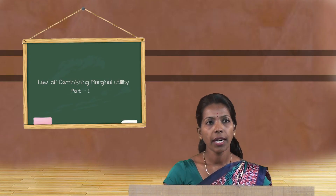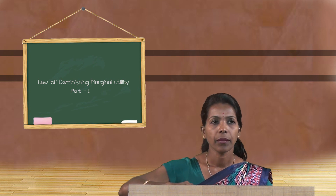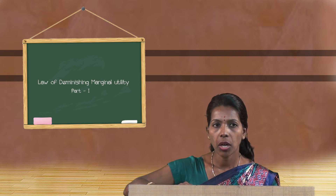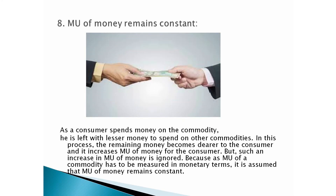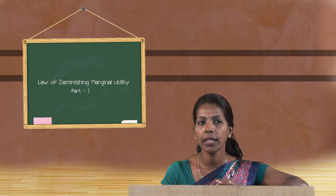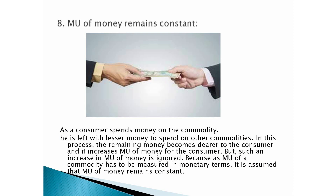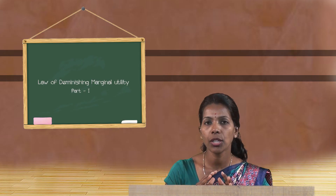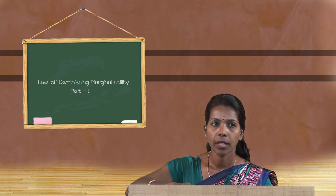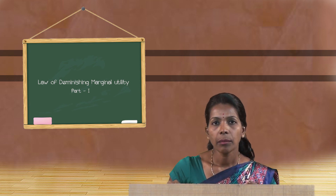The eighth assumption is that the marginal utility of money remains constant. As a consumer spends money on a commodity, they are left with less money to spend on other commodities, which could increase the marginal utility of money. However, such an increase is ignored because marginal utility of a commodity is measured in monetary terms, so the marginal utility of money is assumed to remain constant.